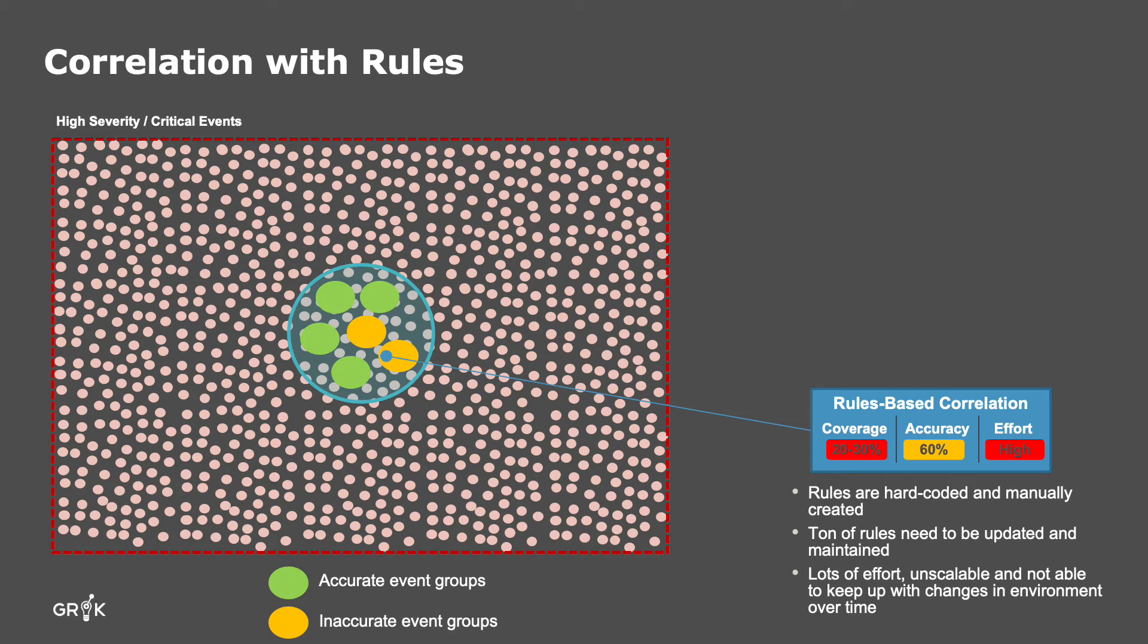This process also limits the team's ability to group events accurately. For instance, related events need to be manually correlated together while at the same time excluding non-related events. The green bubbles here show accurately formed correlations, while the yellow bubbles show poorly formed correlations. Because of the effort and knowledge required, you can quickly see that it is difficult to provide the coverage or accuracy that the IT teams need to create a significant impact on their operations. Additionally, these rules become hard to maintain and scale as the environment changes.